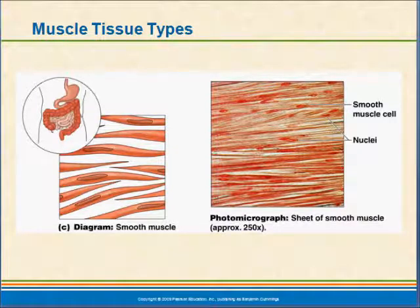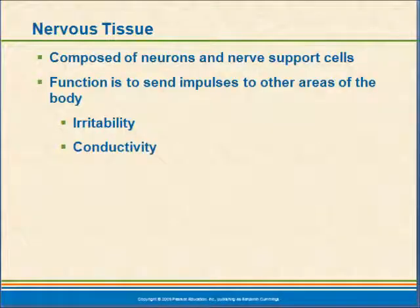The last of our tissue types is nervous tissue, which is composed of neurons — the cells that actually send signals — and a group of support cells called glia. The function of nervous tissue is to send impulses; it is also an excitable tissue just like muscle, but when it is stimulated it conducts a signal as opposed to contracting.